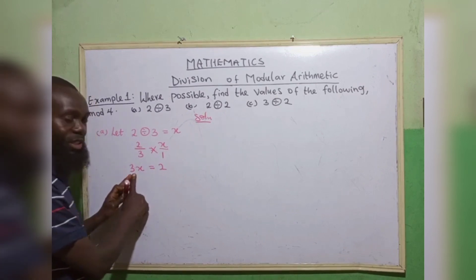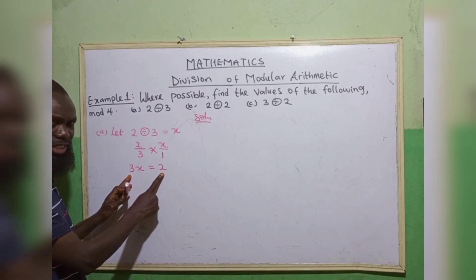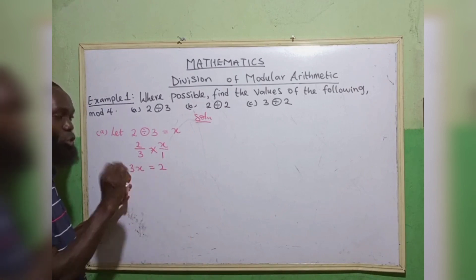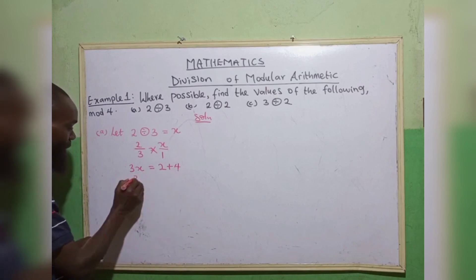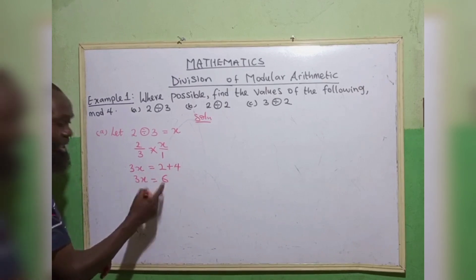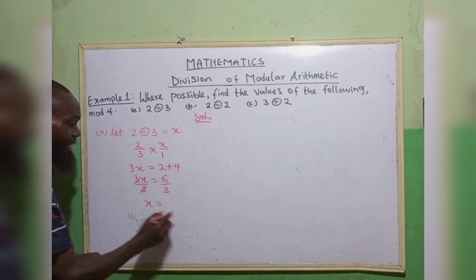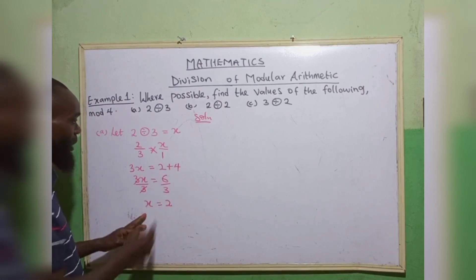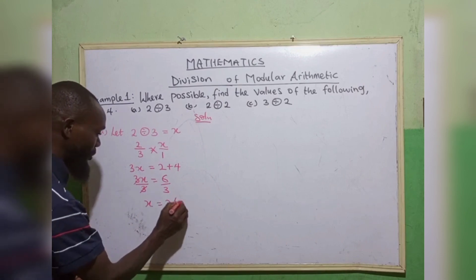Definitely, 3 cannot go in 2 without remainder. If that is the case, we now add our mode to this right hand side. We are working in mode 4, plus 4. So we have 3x is equal to 6. You can see that 3 can go in 6. So x equals to 2. So the value of x here is 2 in mode 4.